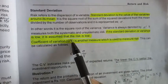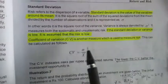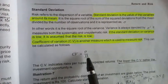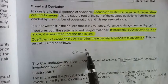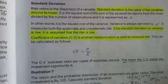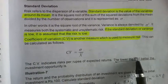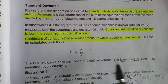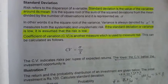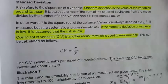The coefficient of variance is another measure. The coefficient of variance is equal to standard deviation divided by mean. The lower the coefficient of variance, the better the investment opportunity.